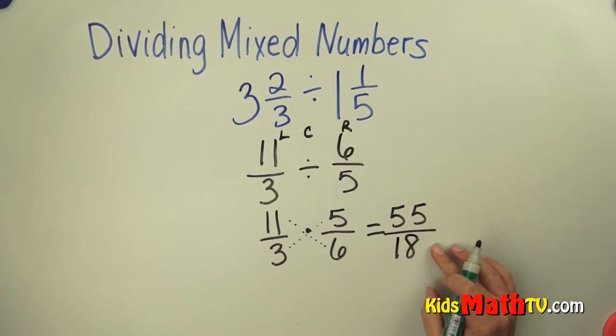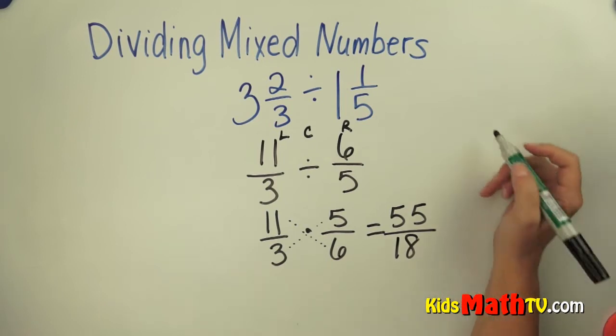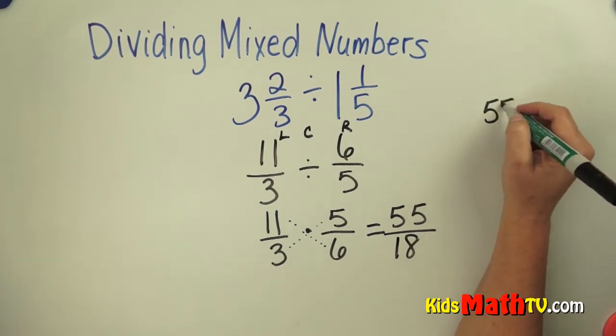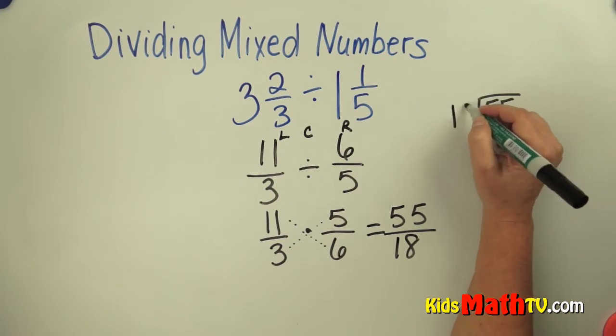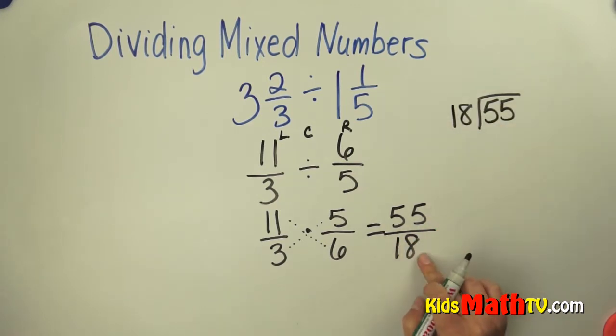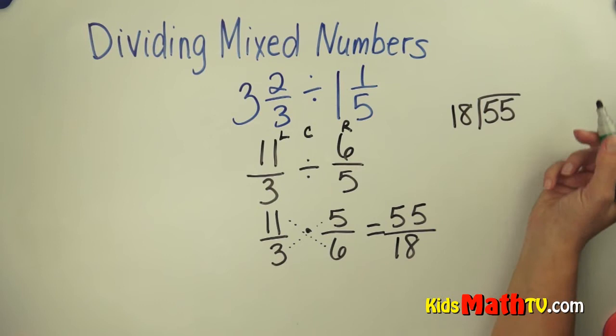Now I have an improper fraction. I want to make that improper fraction into a mixed number. So I divide 55 divided by 18. How many 18's are in 55?